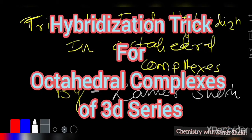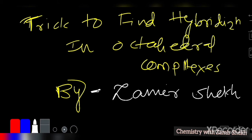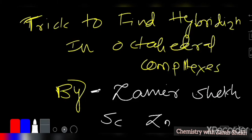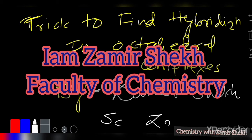Hello everyone. I am going to discuss how to find hybridization in the octahedral complexes, particularly from the 3d series. You should know that the 3d series starts from scandium and ends with zinc. The complexes from scandium to zinc form six-coordinate complexes called octahedral complexes. Within a short time we can find out the hybridization, structure, number of electrons, and magnetism. I am Zamir Sheikh — welcome, everyone.